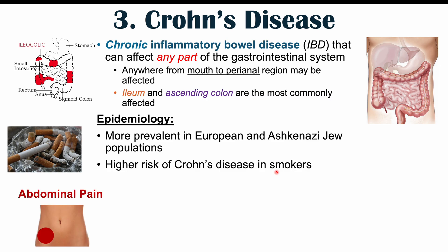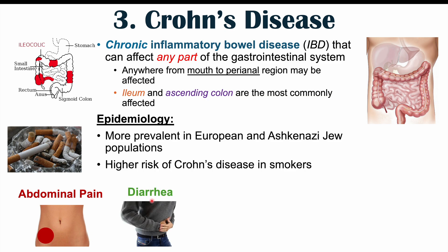Signs and symptoms of Crohn's disease include abdominal pain, often in the right lower quadrant — the same area where the ileum is most commonly affected. Most of the time we see crampy abdominal pain in the right lower quadrant. Frequent bouts of watery diarrhea are very important in Crohn's disease, in contrast to ulcerative colitis where bloody diarrhea is typical. Crohn's disease patients can have bloody diarrhea rarely, but it's mostly watery diarrhea.